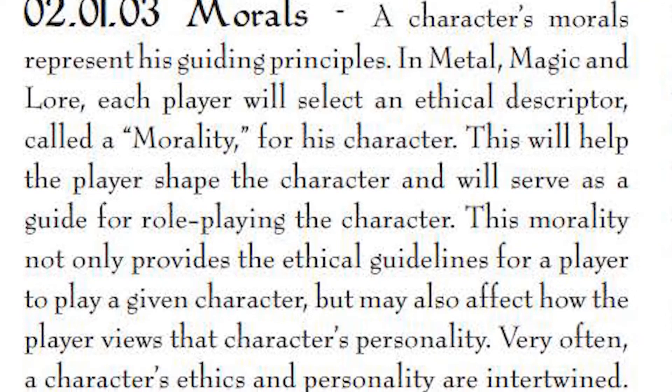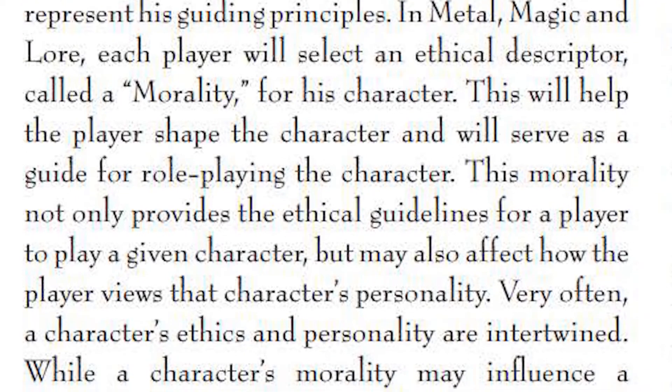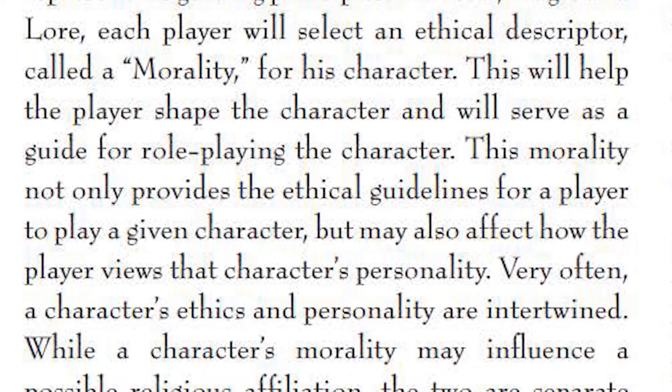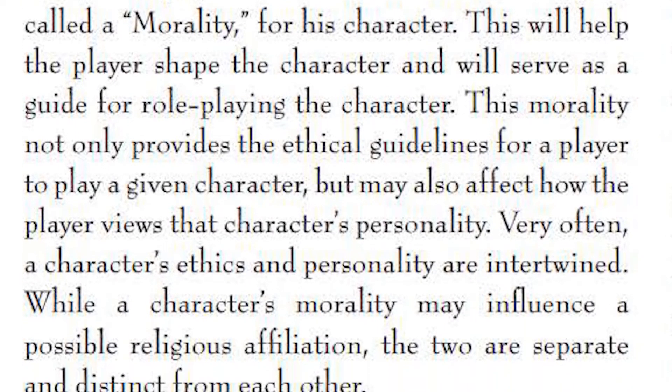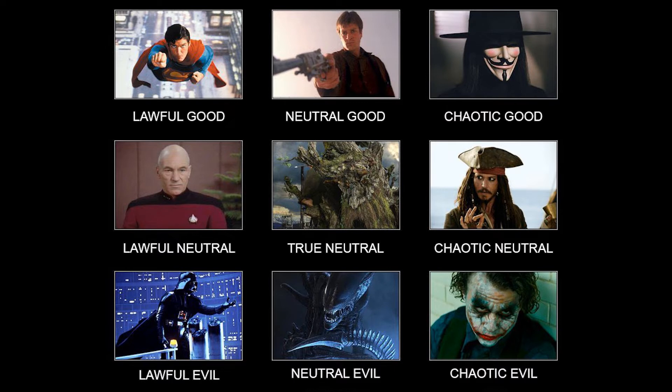Morals. These help players roleplay their characters without restricting them too much. There are six categories and I'm going to show you on the typical alignment chart where they typically fall. Number one: moral. They see the world as black and white while wanting to obey the laws of the land, even if they don't agree with it. It's very hard for these characters to compromise their values. They will fall underneath lawful good.